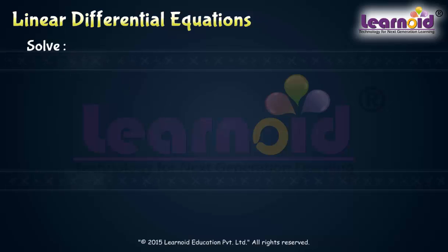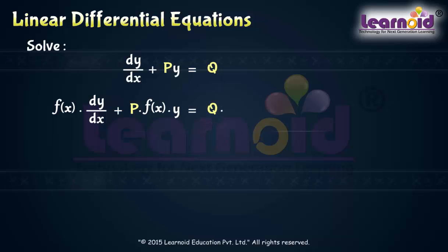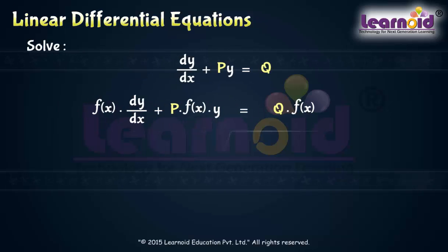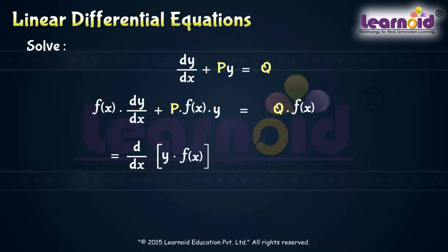To solve a First Order Linear Differential Equation of the type dy/dx plus py is equal to q, multiply both sides of the equation by a function of x, f(x), such that the left-hand side becomes a derivative of y·g(x). On solving the right-hand side, we will get f(x)·dy/dx plus y·f'(x).